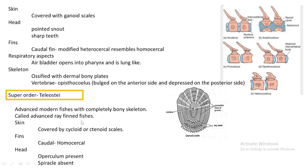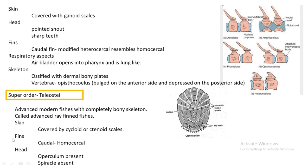Ray-finned fishes means their fins are supported with fin rays, that is why they are called ray-finned fishes. Regarding the skin, it is covered by cycloid or ctenoid scales. Cycloid scales have a smooth appearance, while ctenoid scales have teeth-like structures on their base. Regarding the fins, the caudal fin is homocercal, meaning both lobes are of equal length.